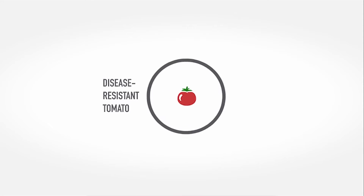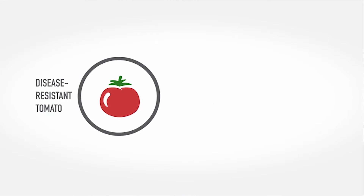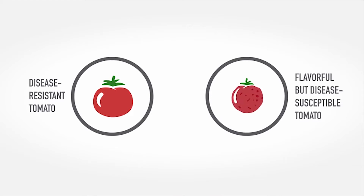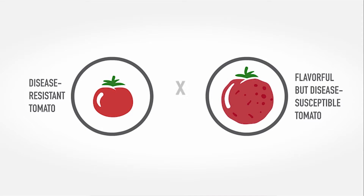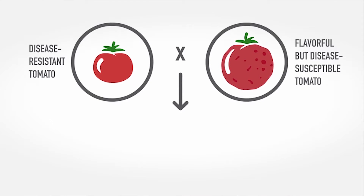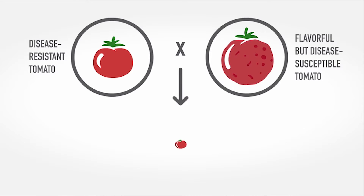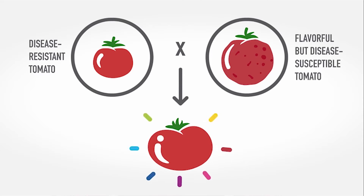Plants are cross-bred to introduce traits and genes from one line into a different genetic background. For example, a disease-resistant tomato plant may be crossed with a flavorful but disease-susceptible tomato, the goal of the cross being to introduce disease resistance into a delicious and desirable tomato variety.